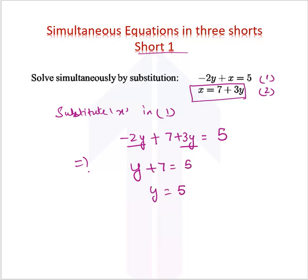Therefore, y is equal to 5 minus 7 because this goes to the other side and you get y is equal to minus 2. Now put this value of y as minus 2 in equation 2.